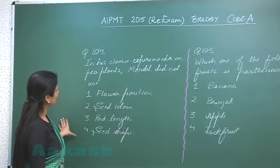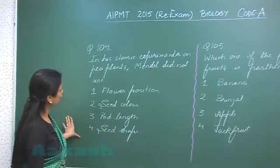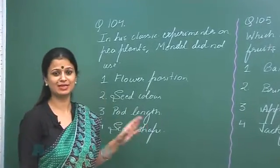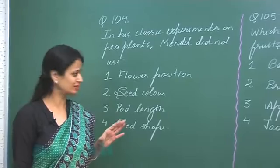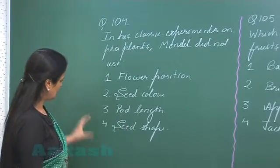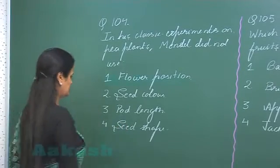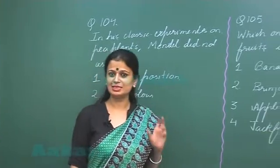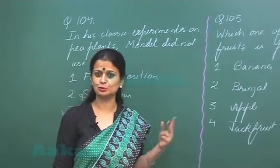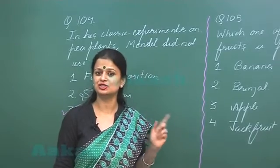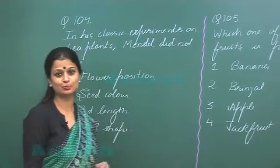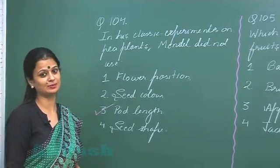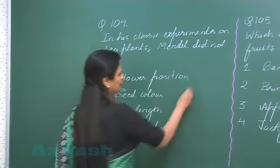In question number 104: which of the following characters was not selected by Mendel for his experiments? The answer is pod length. For the pod, Mendel selected two characters: pod shape and pod color. Pod length was never selected by Mendel.